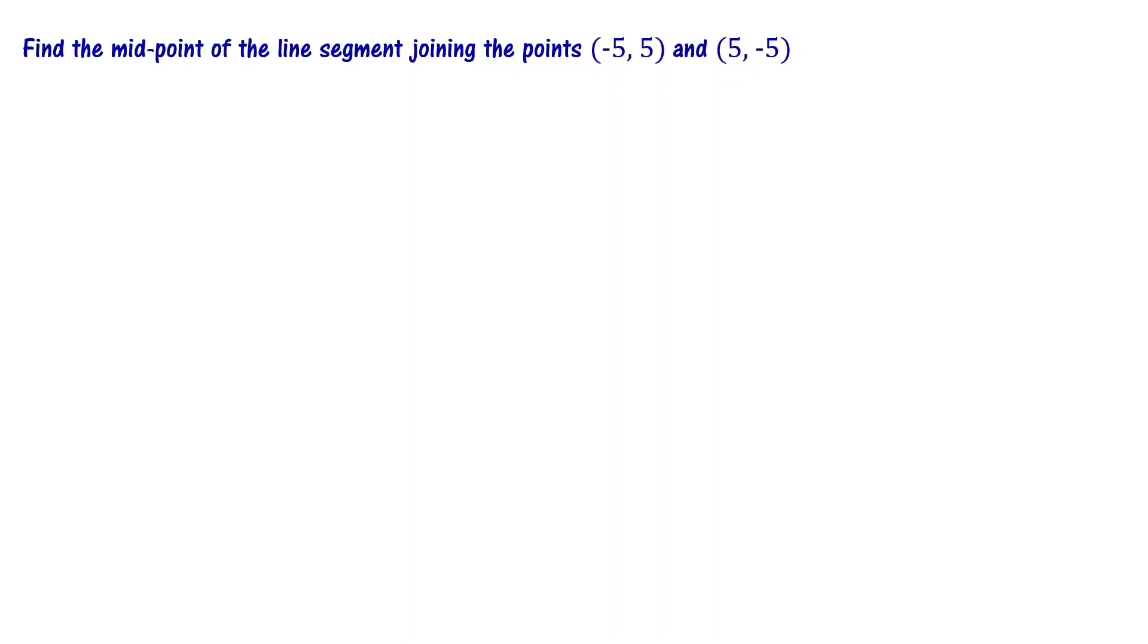Let us look at this problem. Find the midpoint of the line segment joining the points (-5,5) and (5,-5). Let me call this as the first point (x1,y1) and this point as (x2,y2).